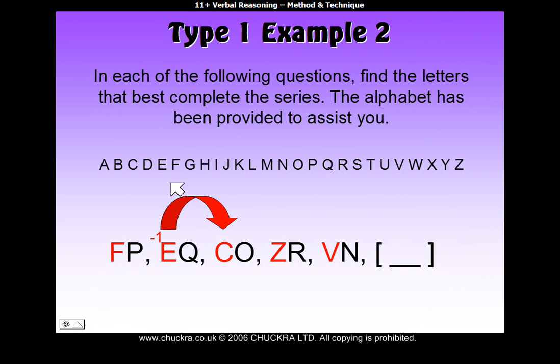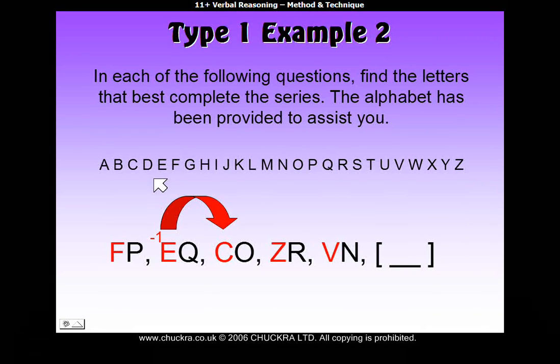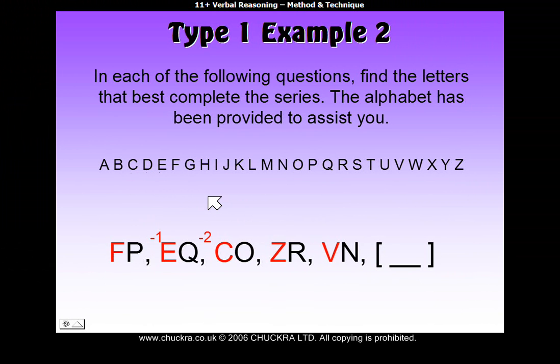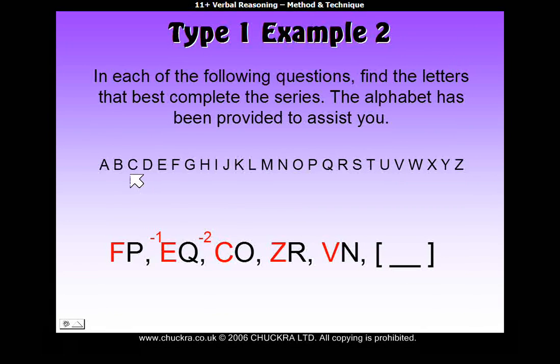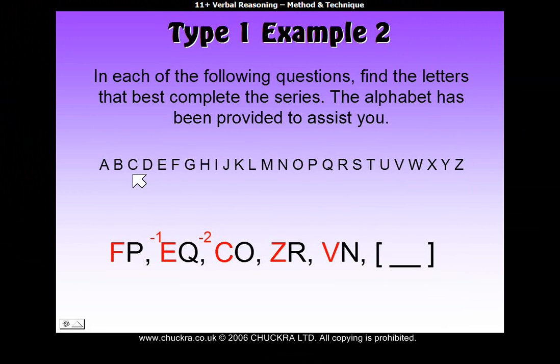Then, from E to C, it's backwards one, two. So, minus two. From C to Z, well, you want to choose the shortest way to get from C to Z. So, instead of going all the way along the alphabet forwards, we can actually go backwards.